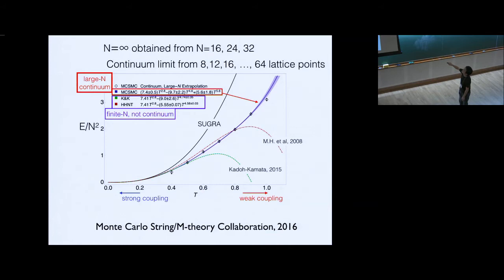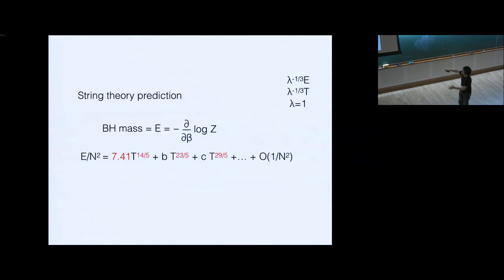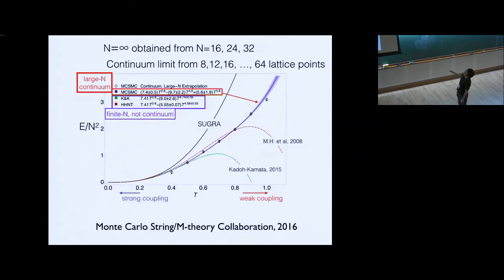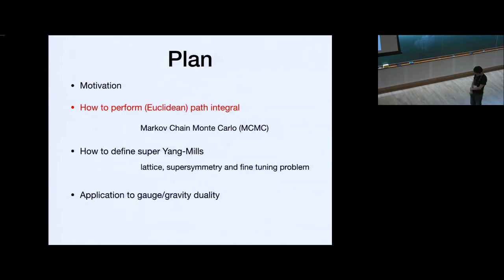We can actually see that the simulation result goes very close to the supergravity curve. We fit it using T to the power 2.8 times 7.4 — that is the number we want. We tried to fit the energy by letting the coefficients be fitting parameters while fixing the powers by hand, and also tried deriving the power with different fitting standards. With a three-parameter fit, we could get 7.41 with very good precision. By choosing alpha-prime corrections carefully, we can fit simulation results perfectly. So it seems we can actually solve the three-quarter problem using numerical simulation.